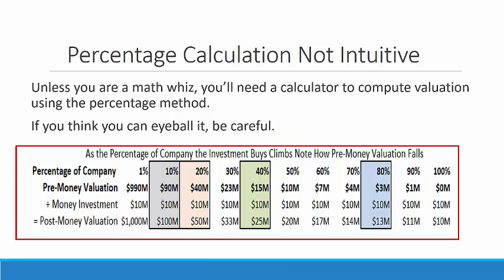Here's a table that will illustrate why. On the top row is the percentage of the company being sold — it starts at 1%, goes to 10, 20, and all the way to 100%. The next row shows the pre-money valuation, which we're going to focus on, and the money investment, which is $10 million in every scenario. The post-money valuation we're going to ignore — it's interesting but not important. Let's focus on the first colored column, where 10% of a company is available for $10 million — its pre-money valuation is $90 million. Now compare to the column where 20% of the company is available for $10 million. While the percentage of the company doubled, the movement in the pre-money valuation is inverse and disproportionate to the change in the percentage.